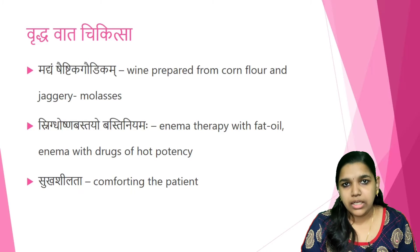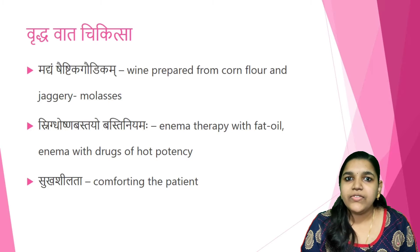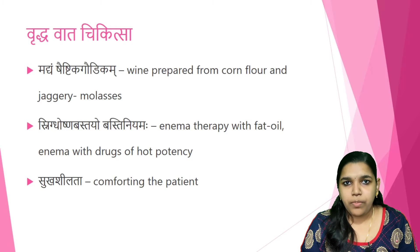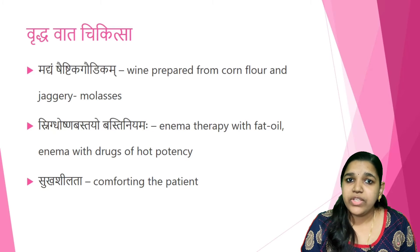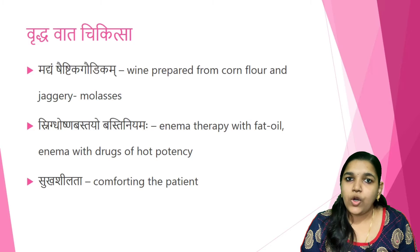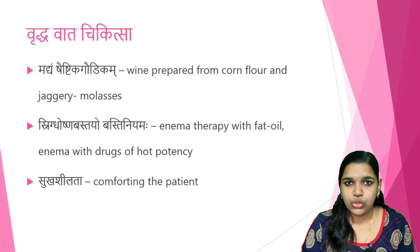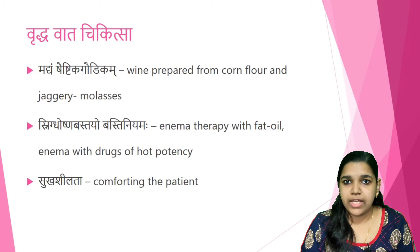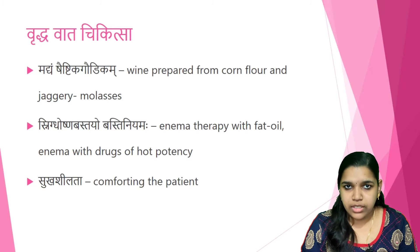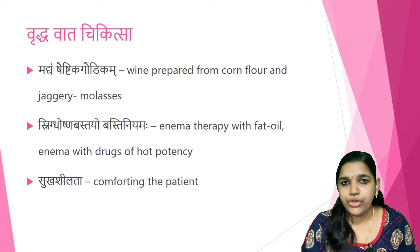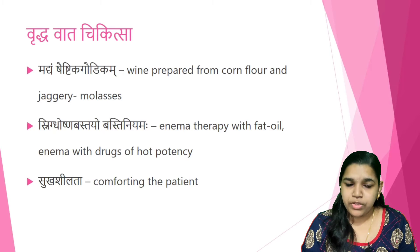Next is Madhyam — alcohol — which has analgesic properties due to its Teekshna and Rooksha qualities, helping control pain and Vata Dosha. Several kinds of Madhya are prepared from different substances. The Paistika and Gaudika types of Madhya can be used in conditions of Vata Vrithi.